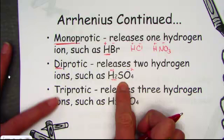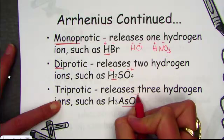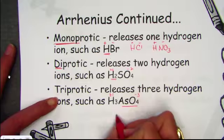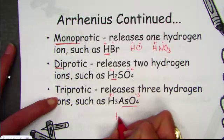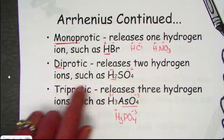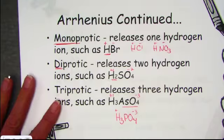Here's an example where we have a polyatomic called arsenate, minus 3. See how it takes 3 hydrogens to create a neutral compound? Arsenic acid is a triprotic acid. Phosphoric acid comes from the polyatomic ion phosphate, and with three hydrogens released it's also triprotic. Two hydrogens are diprotic, and one hydrogen is referred to as monoprotic.